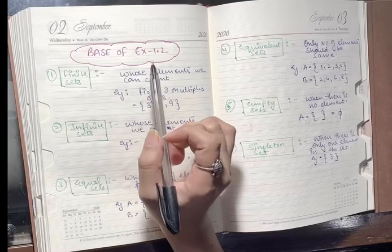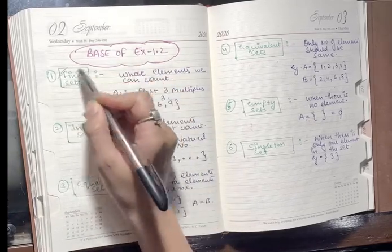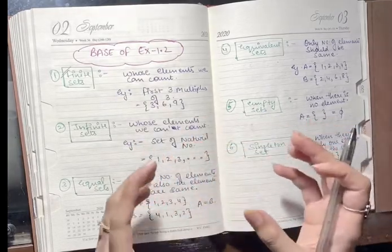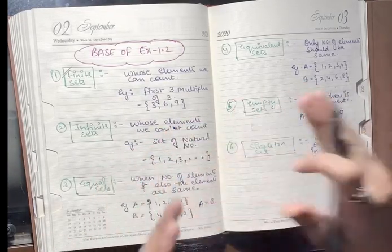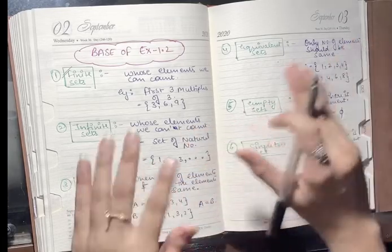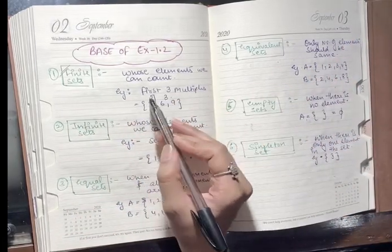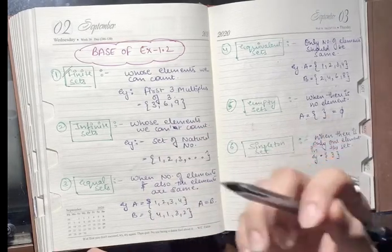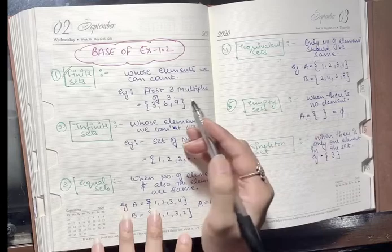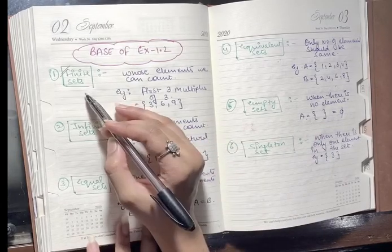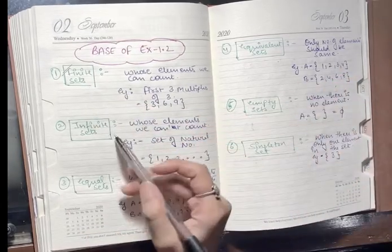Inside Exercise 1.2, we have types of sets. First are finite sets. As the name suggests, finite means fixed — those sets whose elements we can count, which are not endless. For example, the first three multiples of 3 are 3, 6, 9 — three elements, not endless. So those are finite sets — sets whose elements we can count.